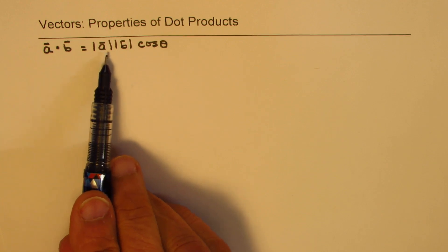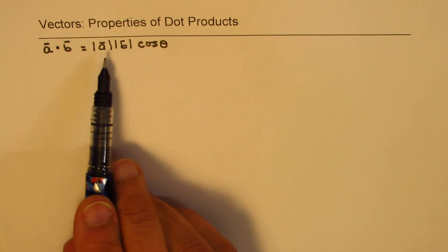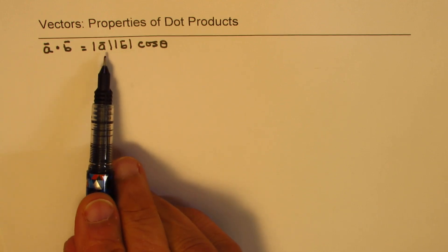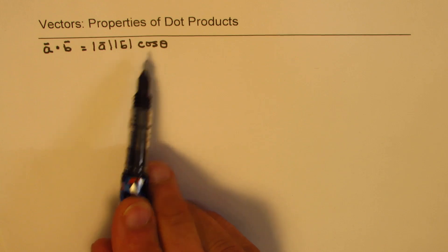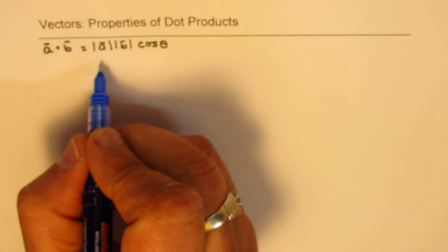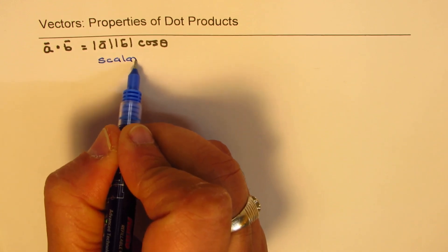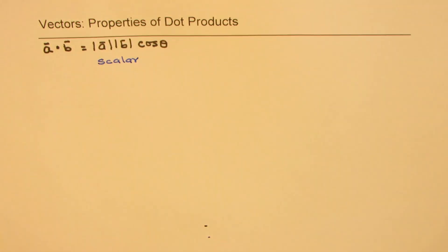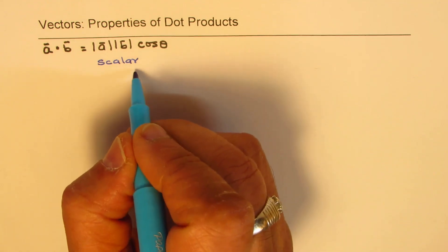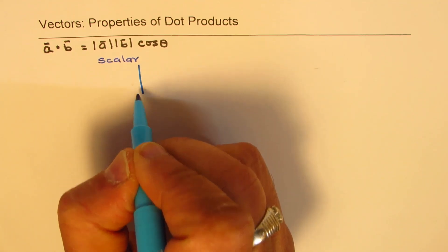On the right side we have three things which are scalar in nature. What we observe here is that the result is a scalar quantity — it's just a number. It could be a positive number or it could be a negative number, mainly because cosine theta can be positive or negative.